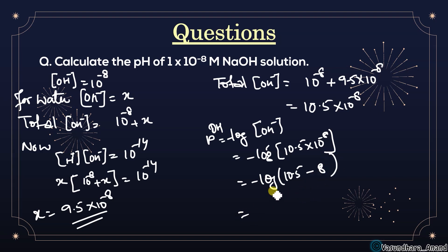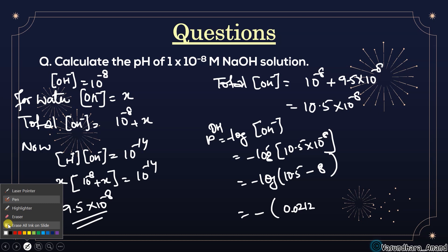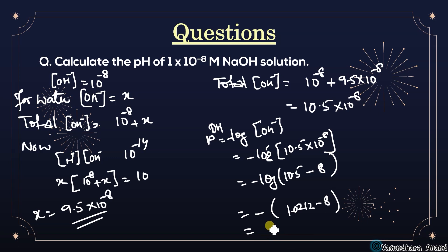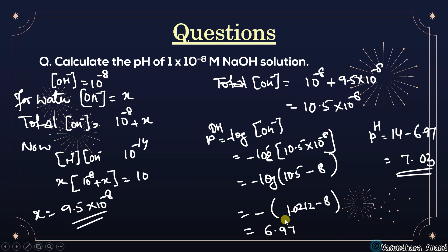Total [OH⁻] = 10⁻⁸ + 9.5×10⁻⁸ = 10.5×10⁻⁸. pOH = -log(10.5×10⁻⁸). log(10.5) ≈ 1.0212, so pOH = 1.0212 - 8 × log10 giving approximately 6.97. Therefore pH = 14 - 6.97 ≈ 7.03. So the pH is just slightly above 7, which is correct for a very dilute base.